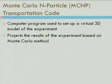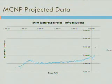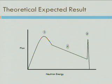The second part of the program we've been working with is the Monte Carlo n-particle transportation code. It's basically a computer program we can use to set up a 3D model of the experiment. It projects the results of the experiment based on Monte Carlo method. Using the computer program, these are the projected results, and comparing them to what we're expecting from the textbooks, they seem to be quite similar.